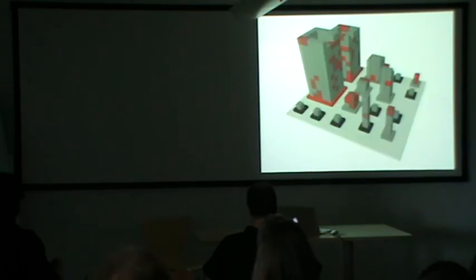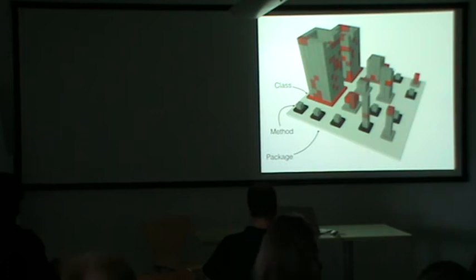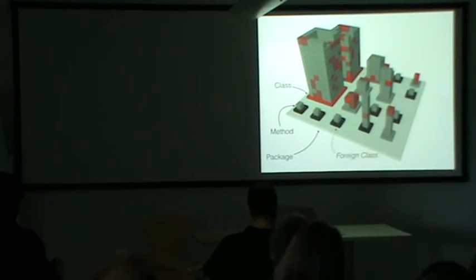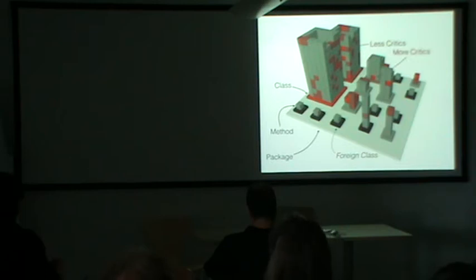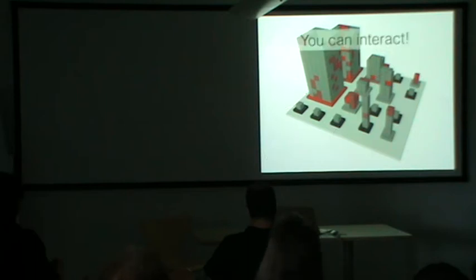We tried to reinvent how you work with critiques. We used the same CodeCity visualization — there's a package which is a big platform at the bottom, then there are classes, and method blocks form buildings on the classes. You can also have a foreign class you extend where you don't want critiques. Dull red blocks mean you have fewer critiques, bright red blocks mean you have a lot of critiques, and grey things obviously don't have any.